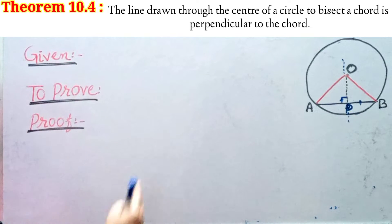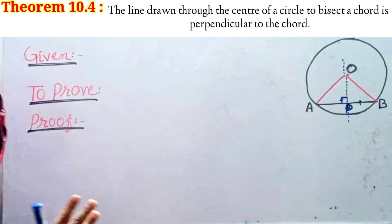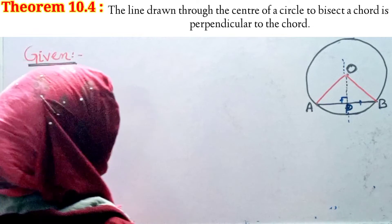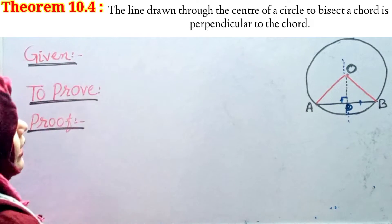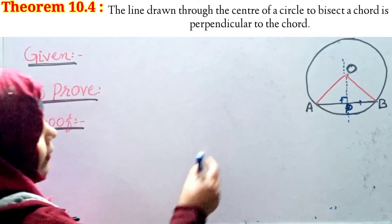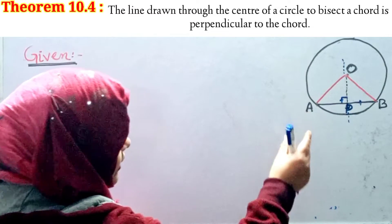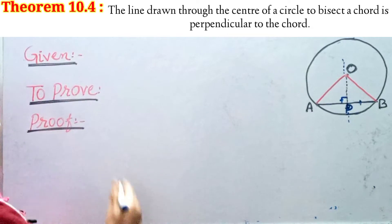So we have simply written the proof, and the steps are written here. Now we will write the Given. Given: OP is a line passing through the center, which bisects AB into two parts — AP and BP.